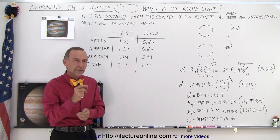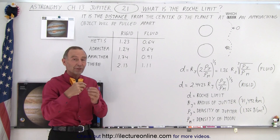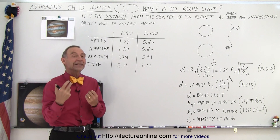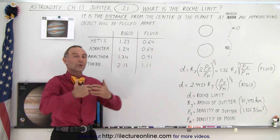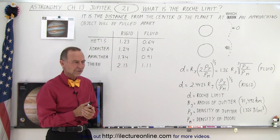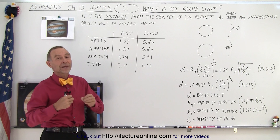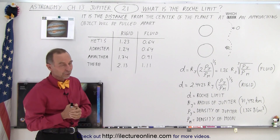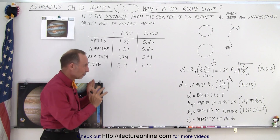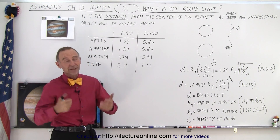The moon Phobos of Mars is one of those moons that's close enough to Mars that it might get pulled in close enough to be within the Roche limit of Mars, and if that happens, the moon will get pulled apart. Some articles estimate that maybe in 10 to 50 million years, Phobos may get close enough to the Roche limit to end up being pulled apart because of the gravitational forces, but we don't think that's going to happen to the moons of Jupiter.